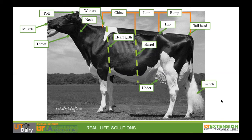We'll end with identifying parts of the leg of the cow. We'll start with the front leg and identify the knee. Even though our knees are on our back legs, the front legs of a dairy cow bend the same way our knees do. On the back leg we'll identify the hock. The hock is where the back legs of the cow bend, kind of like our elbows.